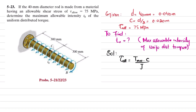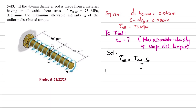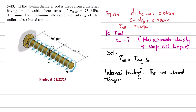We need to find the maximum internal torque, which can be obtained from the internal loading. The maximum internal torque developed in the shaft occurs at point A, because that is the fixed end.